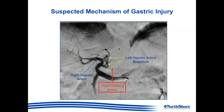We suspect that the mechanism of this gastric injury was as follows — bringing up this image of the arterial anatomy again. Looking at the common hepatic artery and the right and left hepatic artery branches, one of the left hepatic artery branches gave off the right gastric artery. The second Y-90 radioembolization procedure involved cannulation of this particular branch. During that procedure, there was some backflow or misdirection of the Y-90 spheres, which then entered the right gastric artery, subsequently resulting in damage to the gastric antrum and ulceration.